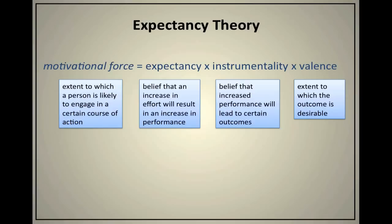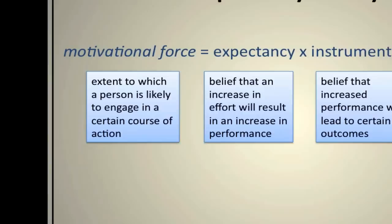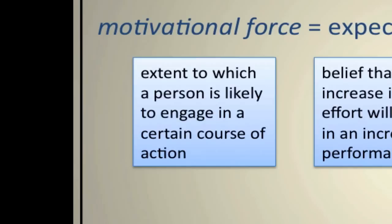The expectancy theory is a commonly used management theory for explaining why people engage in certain behaviors when they have a series of alternatives available to them. It was developed by Victor Vroom in 1964 and essentially stated that expectancy was a sum of what we call a motivational force. The motivational force equals expectancy by instrumentality by what's known as valence. The motivational force is the extent to which someone is likely to engage in a certain course of action.